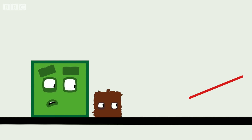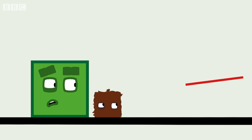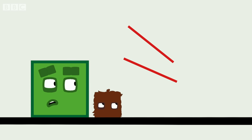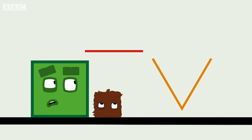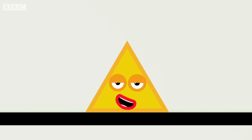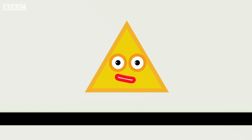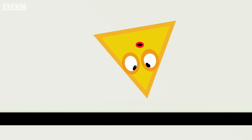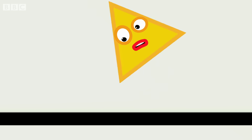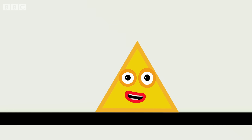Welcome to Flatland, where all the flat shapes live. I am a line. One straight line. Two straight lines. And when three lines join together, we make a triangle. I've got one, two, three — three sides and one, two, three — three corners.